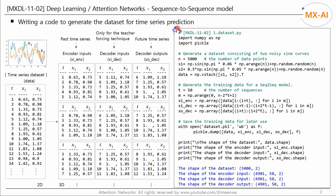First, let's write a code to generate the training dataset for time series prediction. The structure of the time series we looked at in the previous video is as follows. This dataset consists of two sine curves mixed with Gaussian noise. Our goal is to predict the future time series of this dataset using a sequence-to-sequence model. To achieve this, we need to use this data to generate the training data for a sequence-to-sequence model.